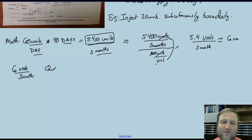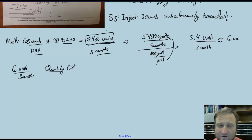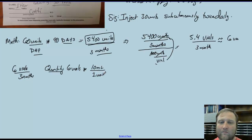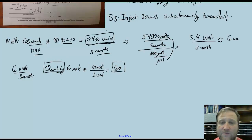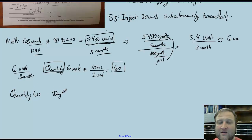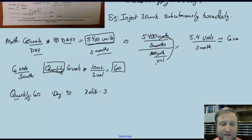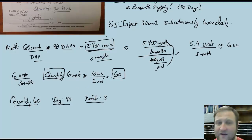We need 6 vials for every three months, and every vial has 10 mLs. So 6 vials × 10 mLs = a quantity of 60. The quantity we enter into our EMR for this prescription would be 60. The prescription days would be 90, and refills would be a value of 3.